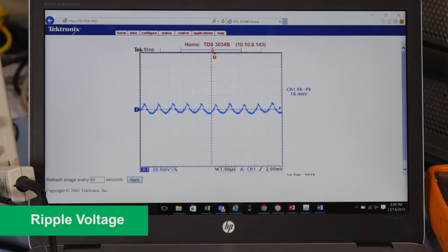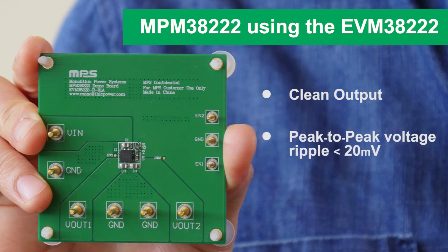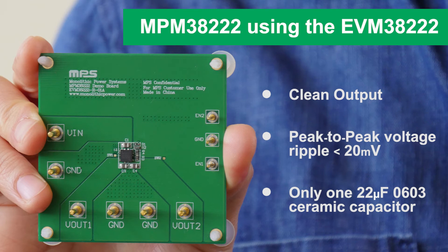For many applications, low noise is important, and thanks to its high switching frequency, the MPM38222 can provide clean output with peak-to-peak voltage ripple less than 20mV using only one 22μF 0603 ceramic capacitor.